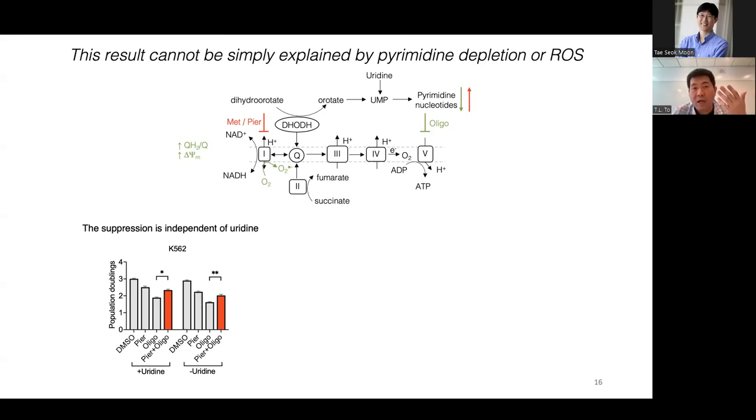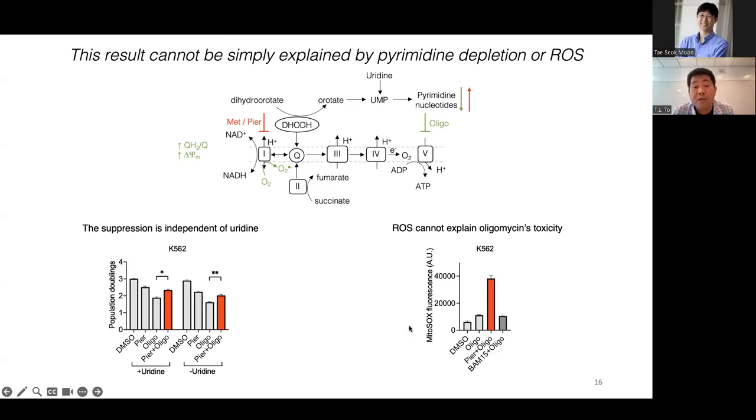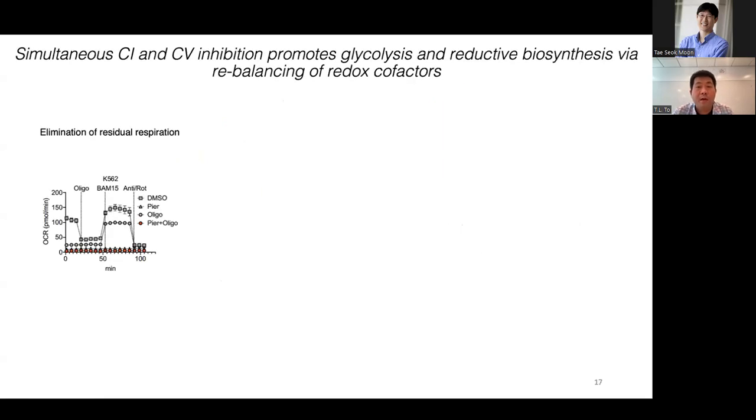So first, we perform all the CRISPR screening with supplement of uridine. And in this cell type, uridine can be converted into pyrimidine through the pyrimidine salvage pathway. As you can see, the interaction, the rescue of C1, C5 together, actually is the same with or without uridine. And the ROS hypothesis is also not true because with inhibitors such as piericidin, it actually drives up the ROS level compared to just oligomycin. So neither of these actually explain what we are observing. So we end up looking more closely into the bioenergetics and metabolism of this interaction.